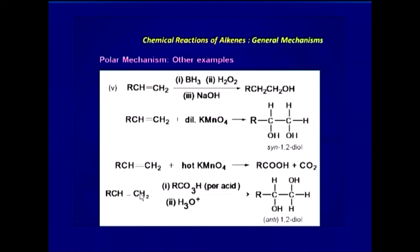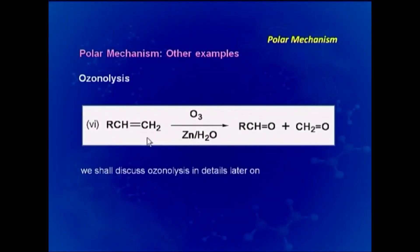Another example of polar addition is with per acids, which also gives 1,2-diols. Looking at stereochemistry: the 1,2-diol from dilute KMnO4 has both hydroxyl groups on the same side — syn addition — while the diol from per acid has the two hydroxyl groups anti to each other. Ozonolysis is another example: the C=C double bond is converted into two carbonyl products where each carbon is bonded to oxygen by a double bond, giving aldehydes.